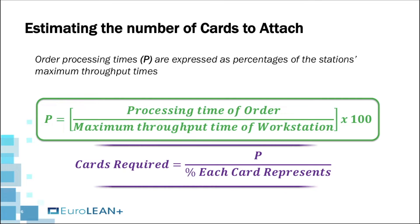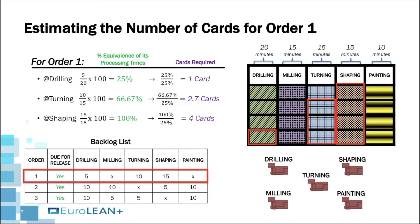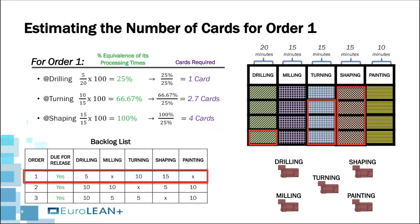The percentages are then linked to the number of cards required by dividing P by the percentage each card represents. Using Order 1 as an example, the five minutes required for processing Order 1 at drilling is 25% of the maximum desired throughput time for drilling, which means one card is needed for drilling. The same calculation is repeated for turning and shaping. For turning, it translates to a percentage that cannot be precisely represented by the card percentage, which shows why smaller card percentages are sometimes better. For instance, with six cards each representing 16.67%, a more precise conversion would be possible. In this case, we approximate to three cards.